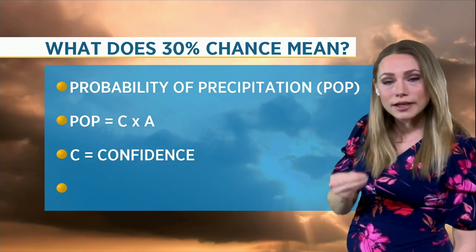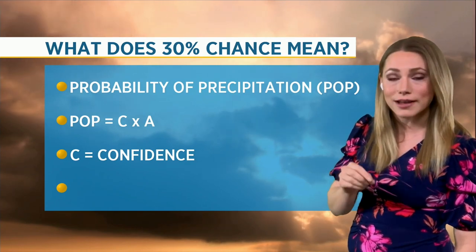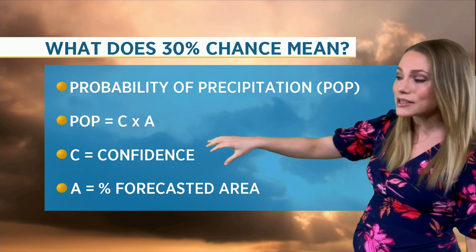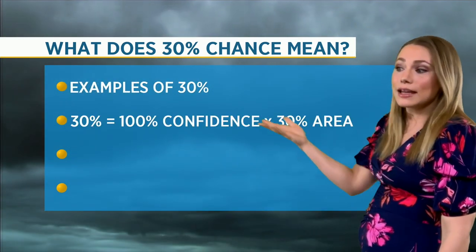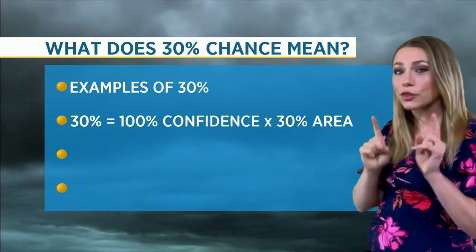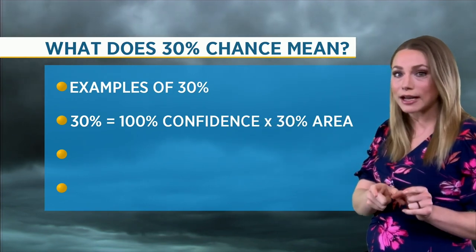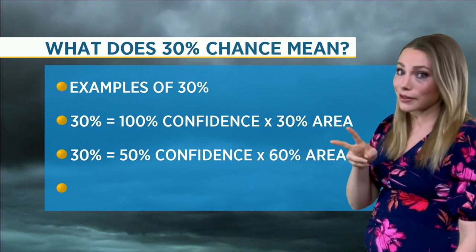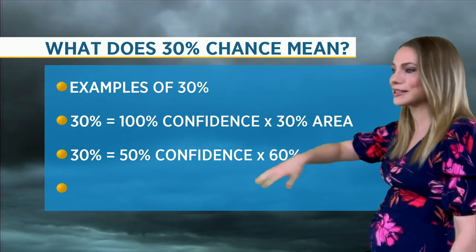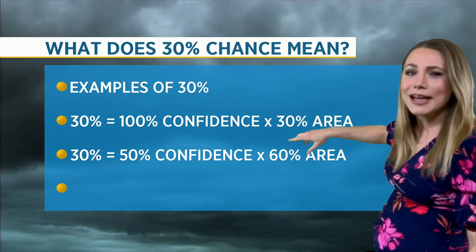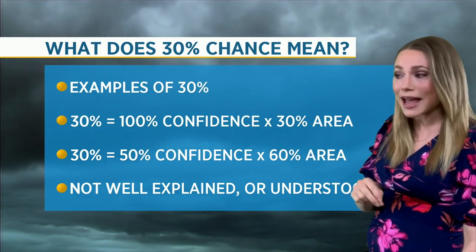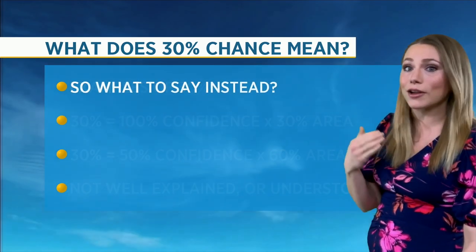C is the confidence the meteorologist has in the forecast, shown as a percent. A is the percent of the forecasted area. So 30% could mean a 100% confidence that 30% of the forecasted area is going to get rain. But 30% can also mean that you've got a 50% confidence that 60% of the area could see rain. See where it gets confusing? It's often not well explained, and even more so, it's not well understood.